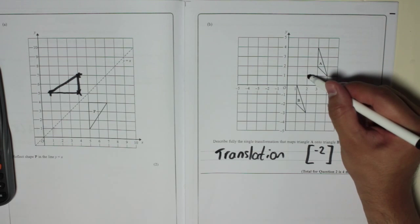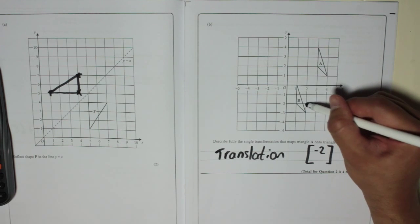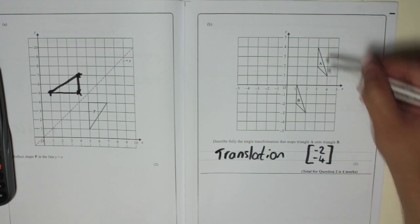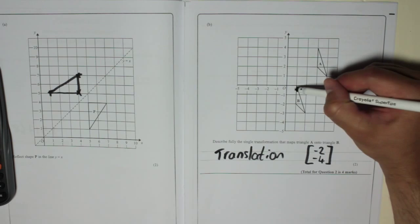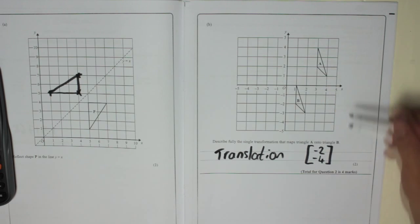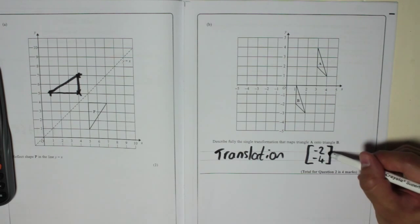And then left two, down one, two, three, four, so minus four. And it doesn't matter which point you choose. If you choose the top one, you've got to get to that top one, so it's still minus two and left two minus two, and down four is minus four.